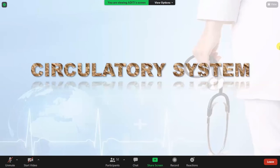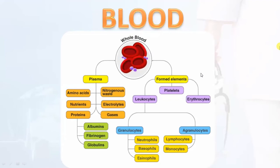Blood is basically made up of plasma and formed elements. Plasma components are amino acids, nutrients, electrolytes, gases, nitrogenous waste, and proteins. Proteins are basically albumin, fibrinogen, and globulin.